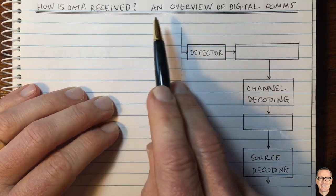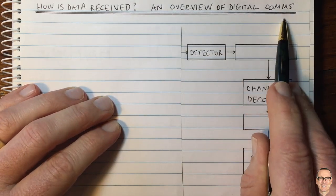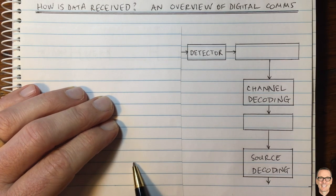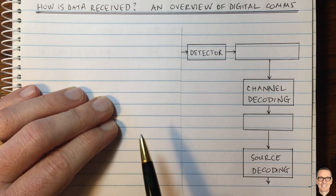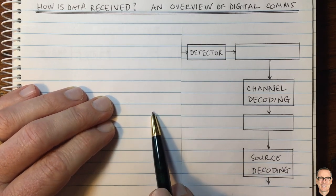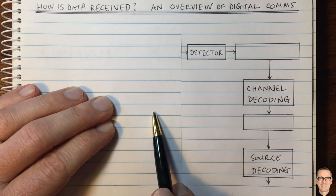How is data received? We're going to look at an overview of a digital communications receiver. There's a video on the channel that talks about transmitting data, and if you haven't seen that, look in the details below this video. You'll find the link.